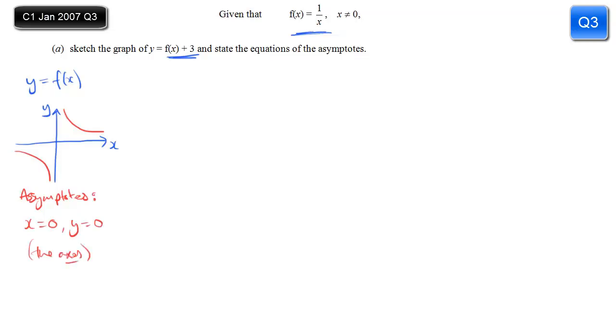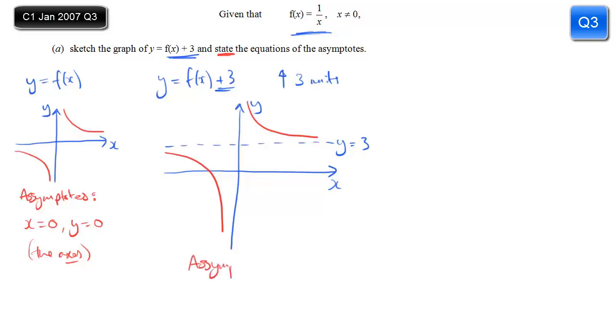So now if I want y equals f(x) + 3, well how does this compare to f(x)? I've added 3 to all the y values. So all the y values are 3 more than they were. That means the whole thing moves up by 3 units. It's a translation. So the best way to do this, get your axes drawn and think about what happens to the asymptotes. The vertical asymptote doesn't move, but the horizontal one moves up by 3 units. So that is now y equals 3. Draw that in first as a dotted line. The rest is very easy after that, because you can simply draw in the standard shape of a reciprocal graph.